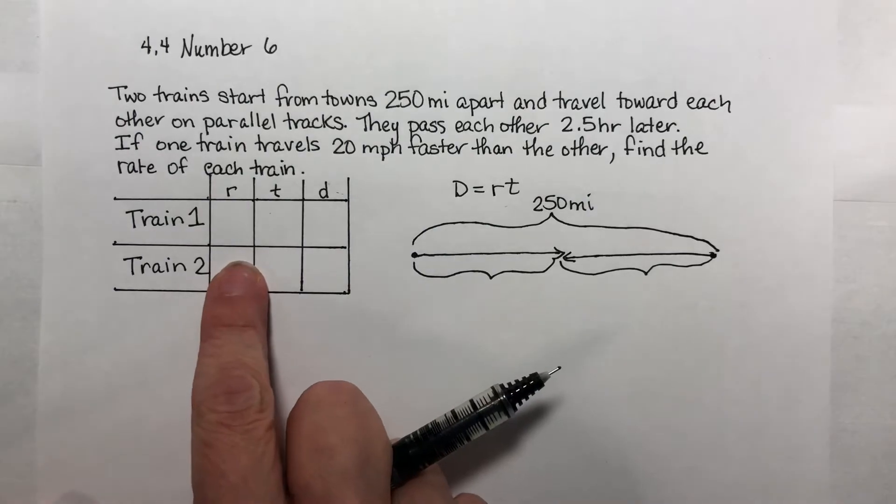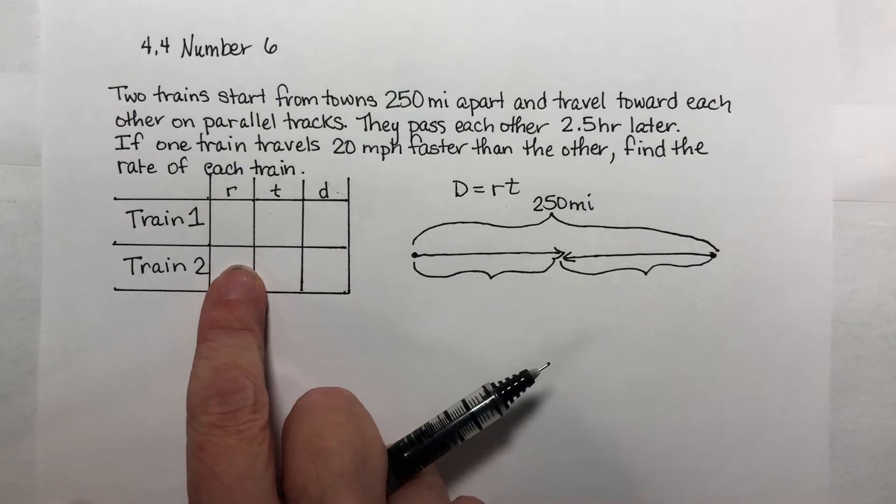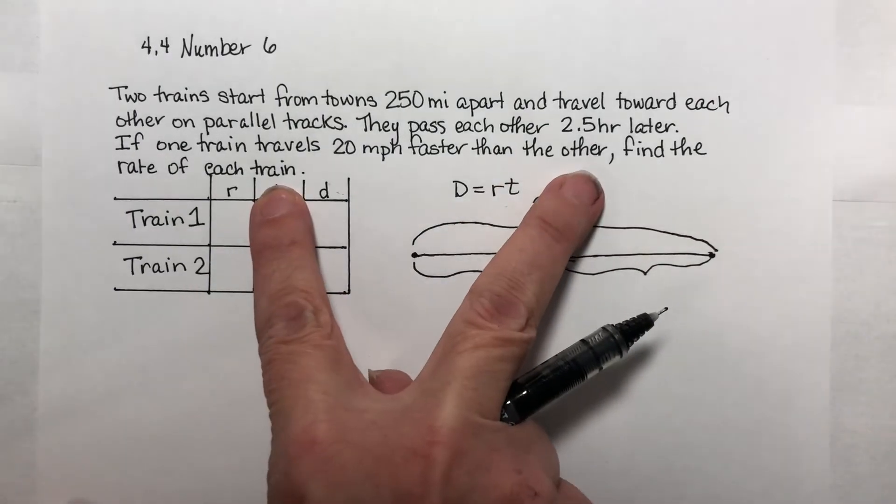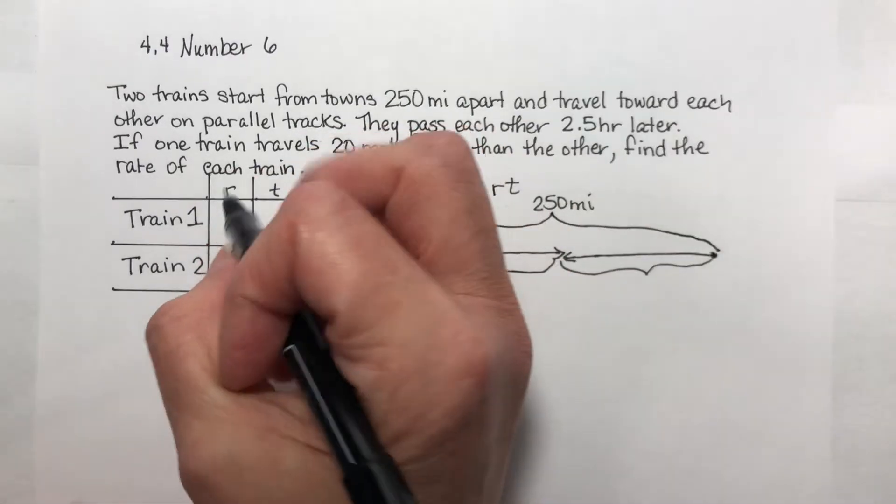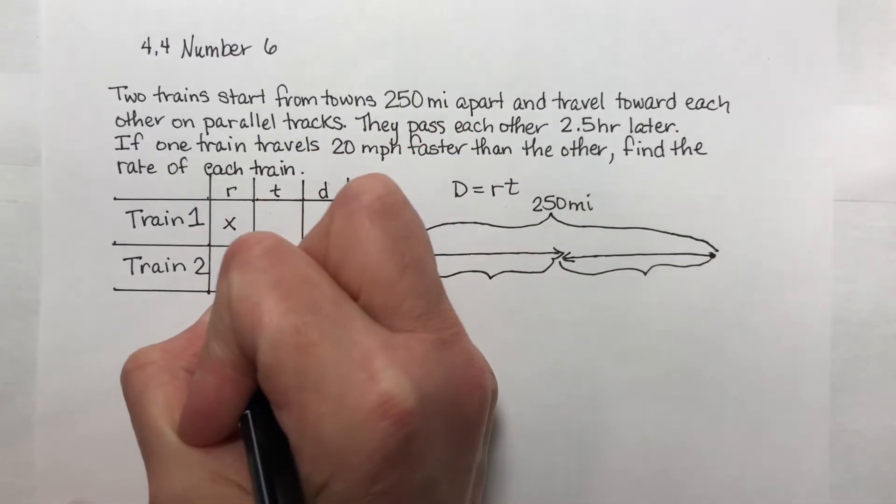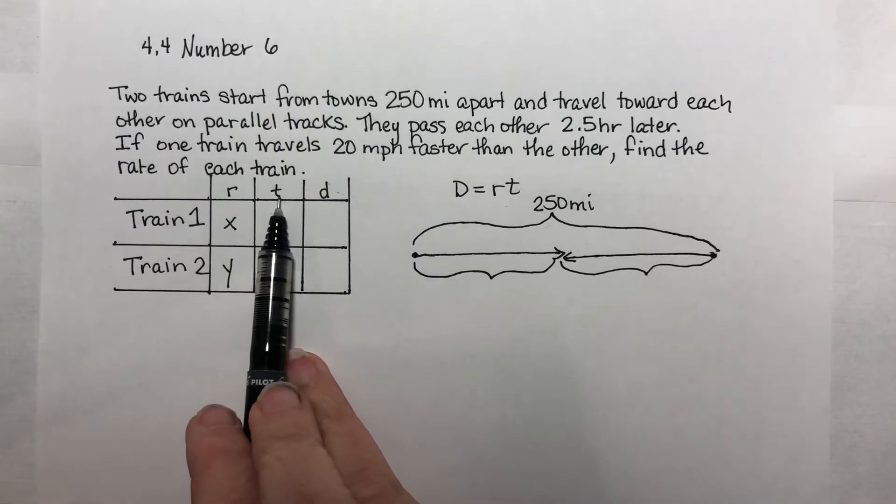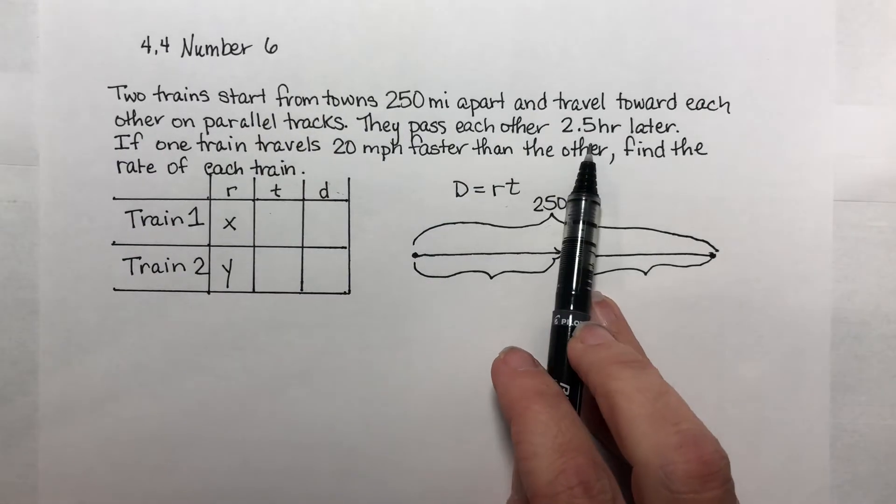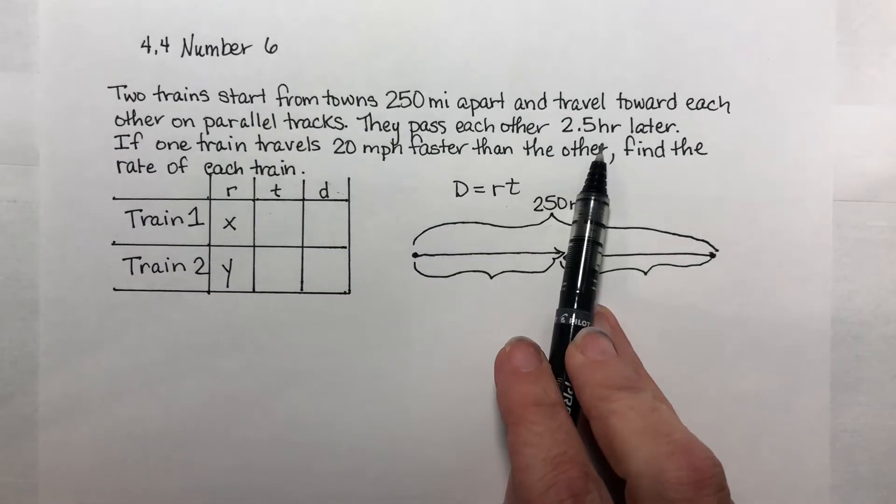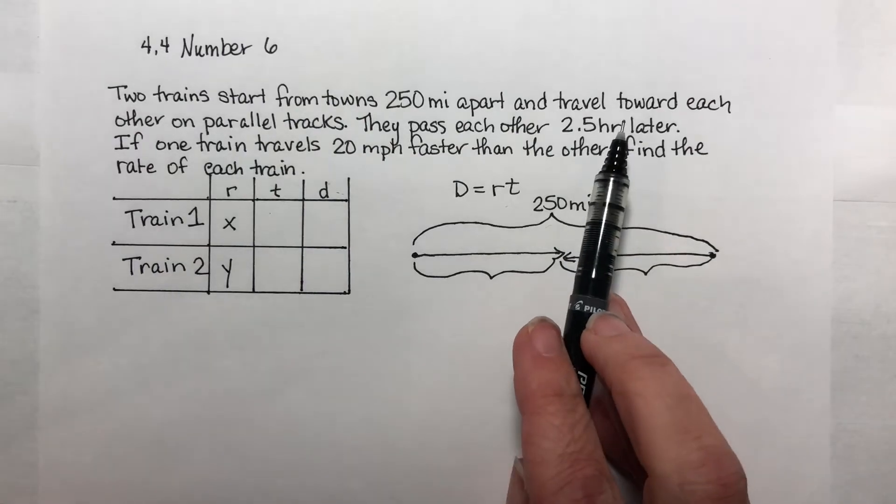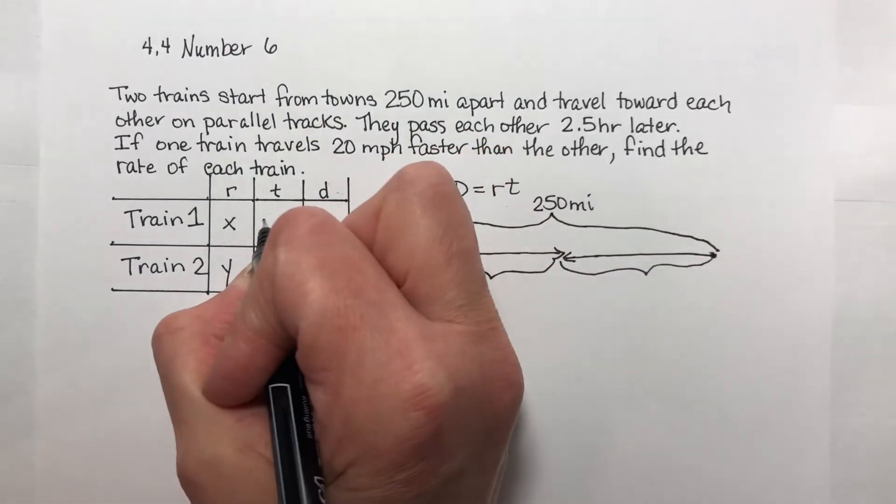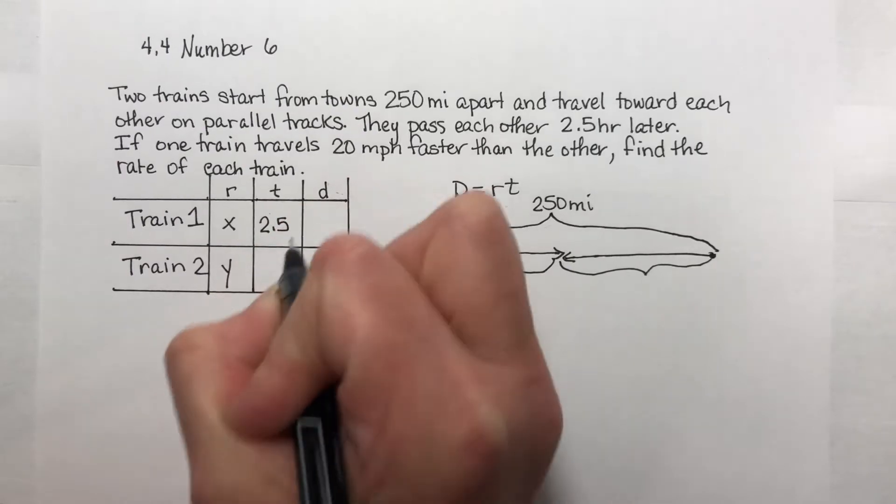Let's start off here. I'm looking for the rates of both trains. So that's the part I don't know. I'm going to call this x and this is y. Now I don't know how fast they're going but at least in math I have a way of talking about it. Now how long did they travel? Well they both traveled two and a half hours. They started at the same time and we're asking how fast they were going when they meet. So the time for both of these is 2.5.